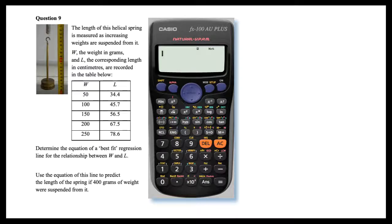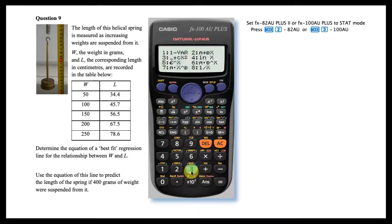Using a Casio FX82AU plus 2 or Casio FX100AU+, the equation of a best fit regression line can be determined. To do so, first set your calculator to statistics or stat mode by pressing mode and then 2 on an FX82AU or mode and then choosing 3 on a 100AU.